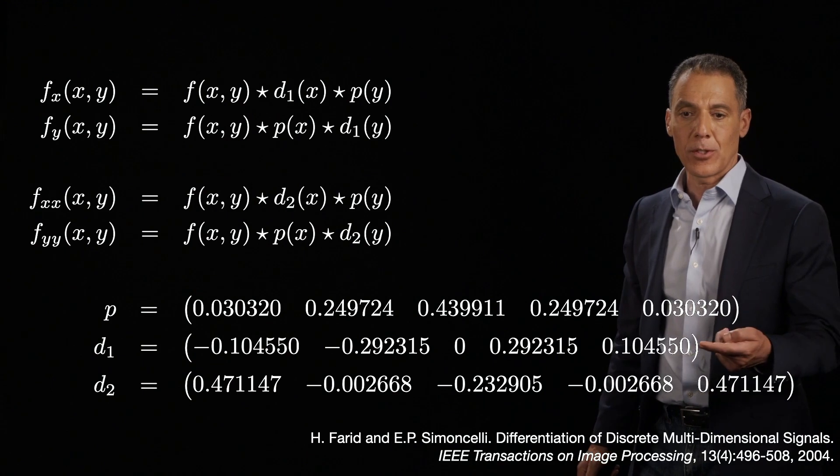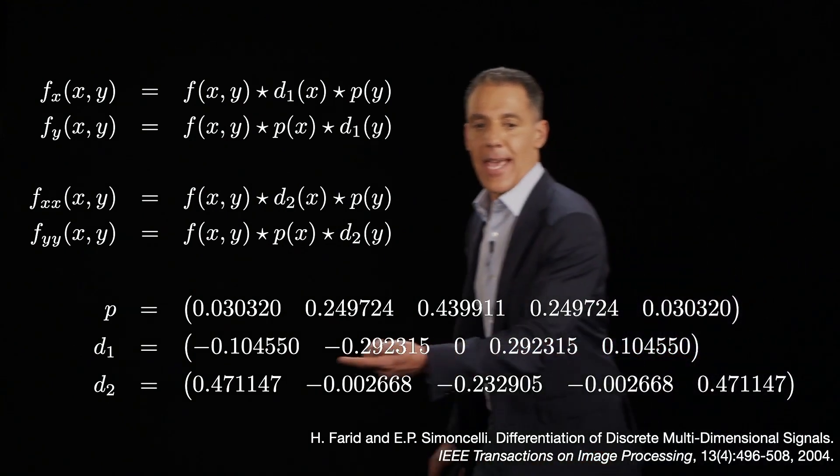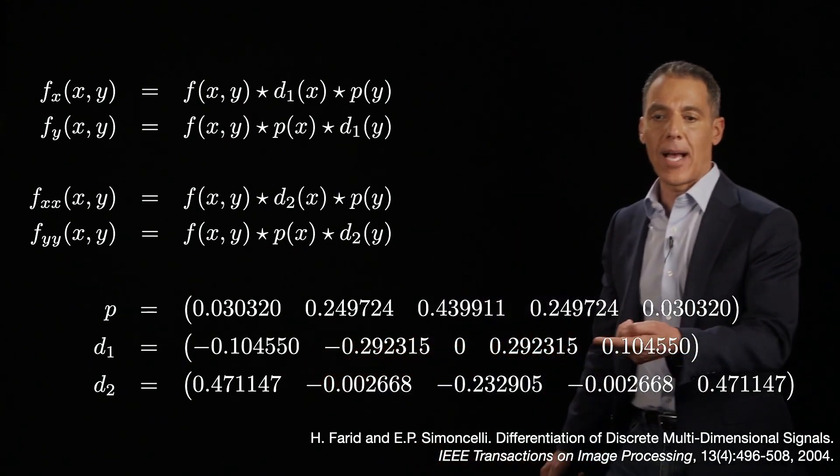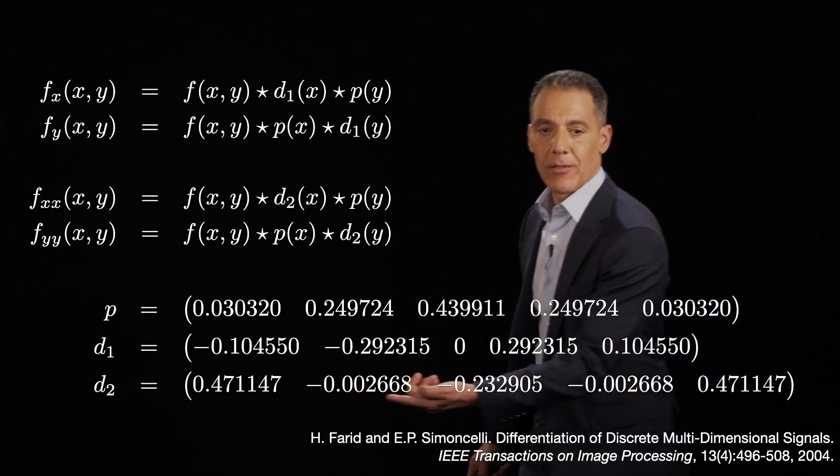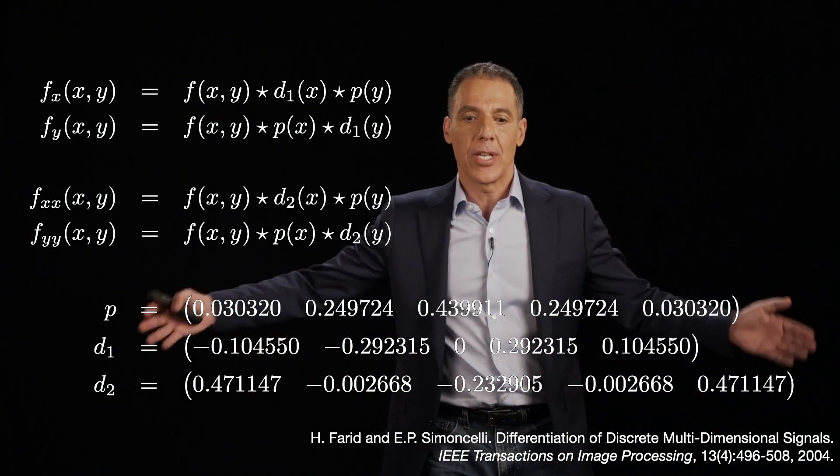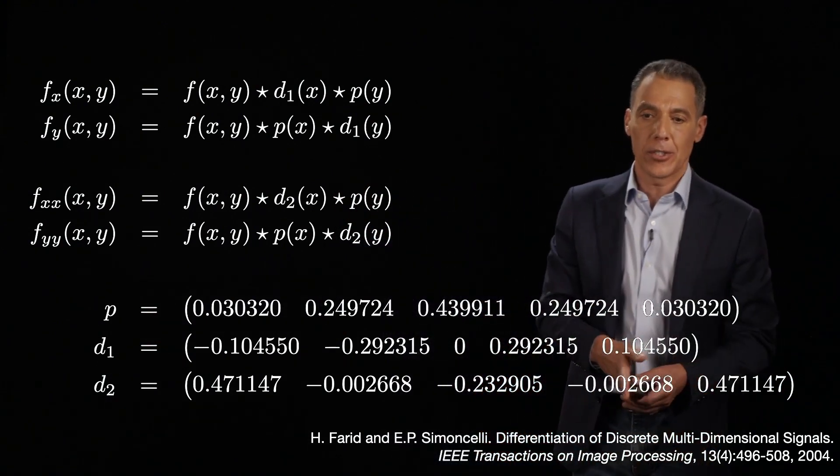Notice that the derivative filter is antisymmetric. It's negative over here, zero, positive, difference. And then, of course, the second derivative has positive lobes and then a negative lobe here, just like what we saw earlier.